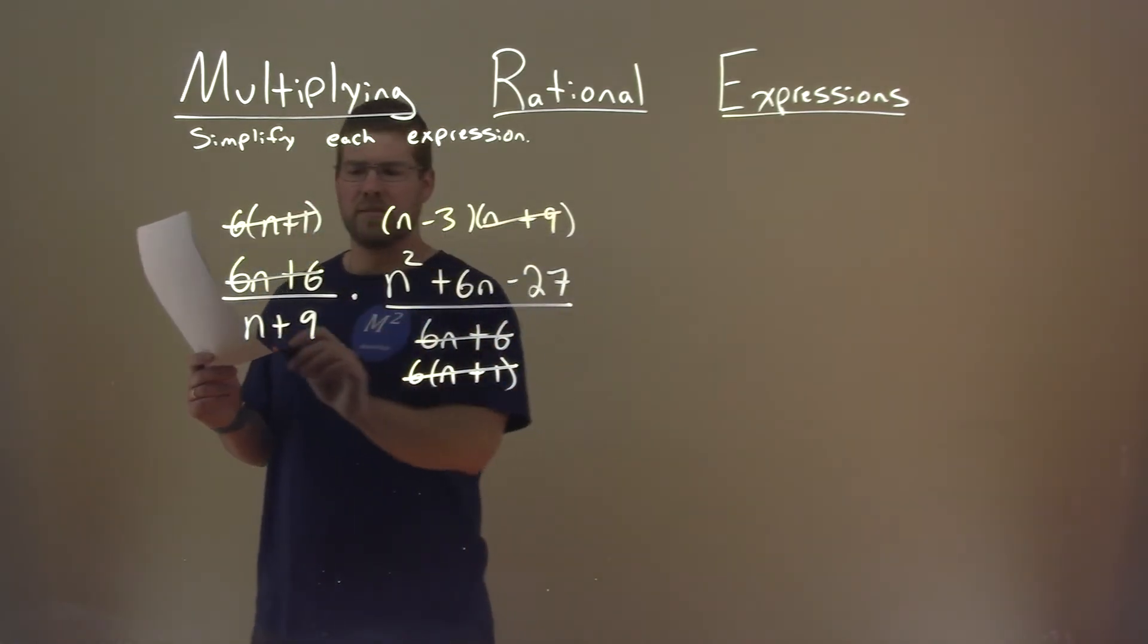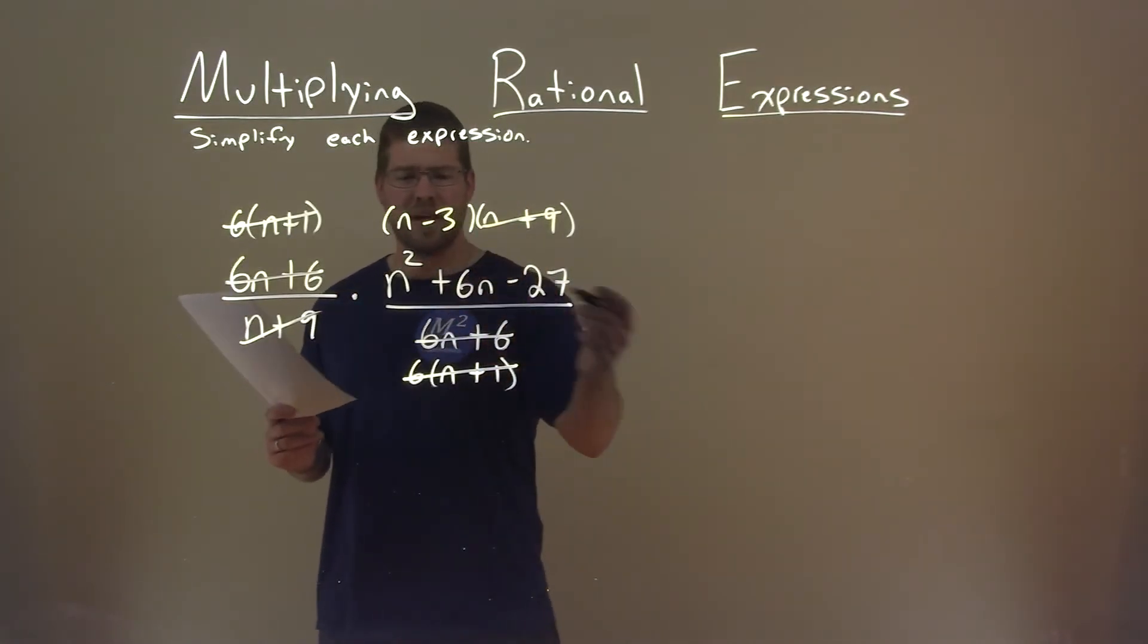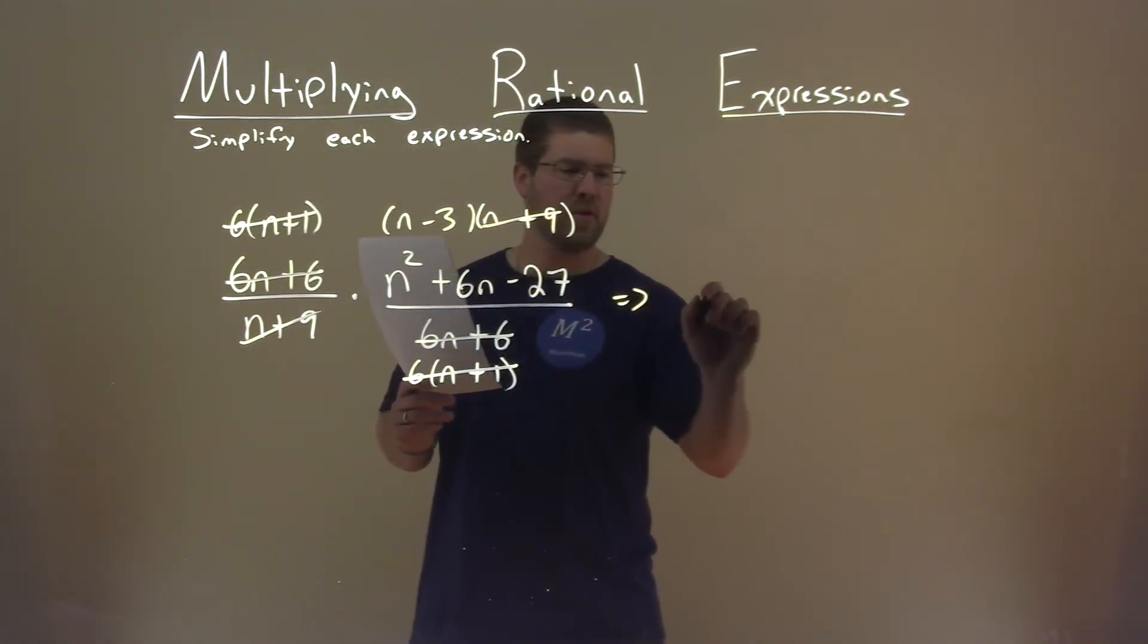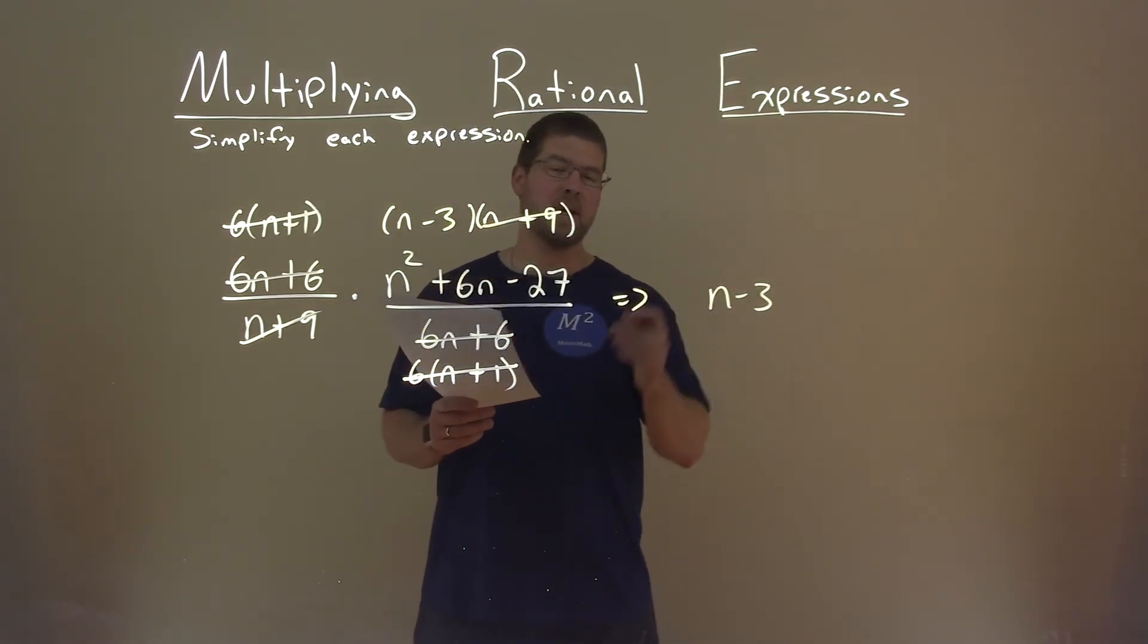n plus 9 cancels out with this n plus 9 as well. So what are we left with? Well, just that n minus 3 in the numerator, and that's it. Our final answer here is just n minus 3.